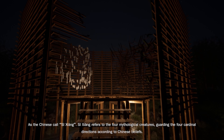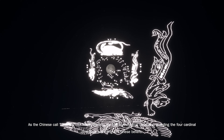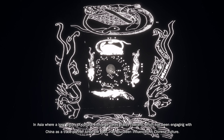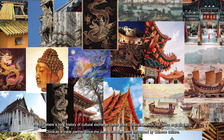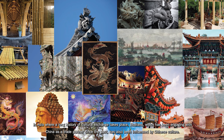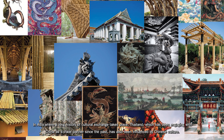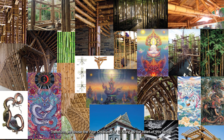As the Chinese call it, Si Xiang — Si Xiang refers to the four mythological creatures guarding the four cardinal directions according to Chinese beliefs. In Asia, where a long history of cultural exchange takes place, Thailand, which has been engaged with China as a trade partner since the past, has also been influenced by Chinese culture. Therefore, we chose the four creatures of Si Xiang as the heart of our design.